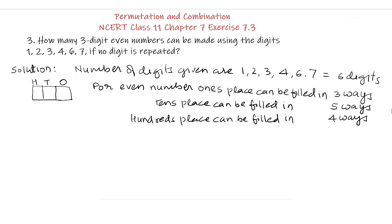And 100's place can be filled in 4 ways by the remaining 4 digits. Therefore, total 3 digit even numbers that can be made are 3 multiplied by 5 multiplied by 4 equal to 60